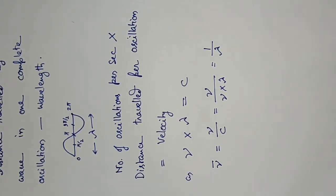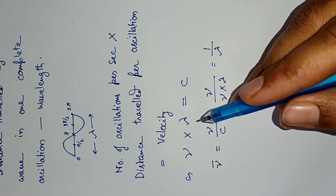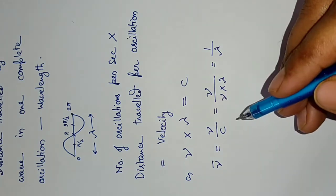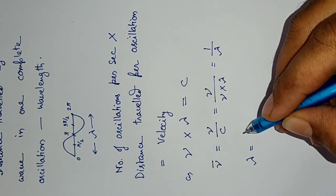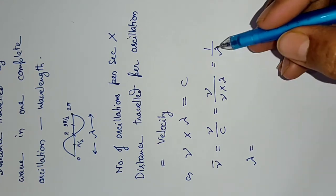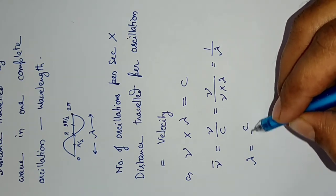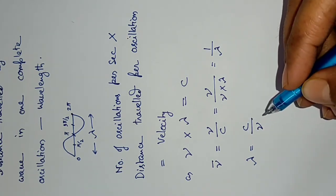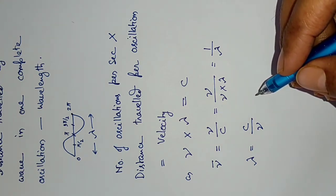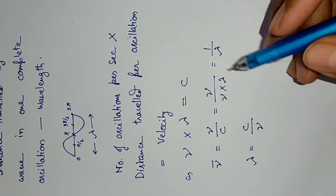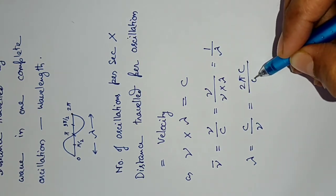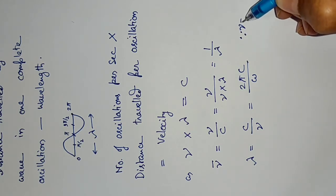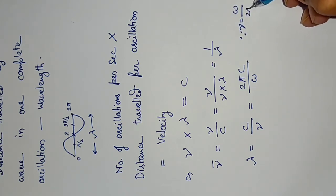If we try to express wavelength λ in terms of the angular frequency, it will be: λ = c/ν, and since ν = ω/2π (as discussed in the previous video), it becomes λ = 2πc/ω. Since ν is ω upon 2π, this completes the homework.